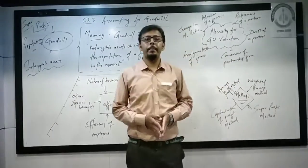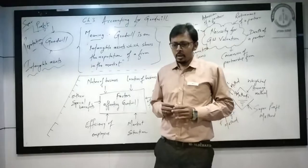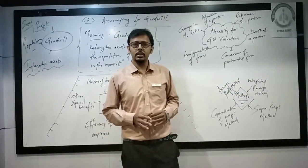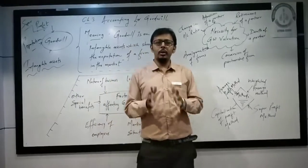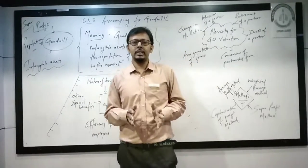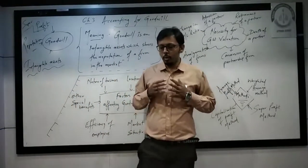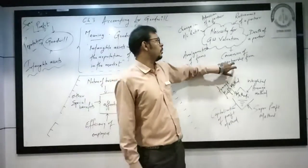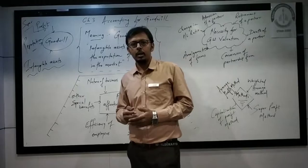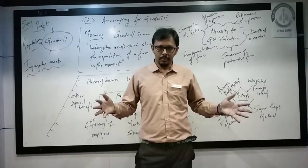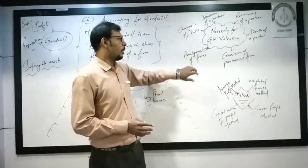Conversion of a partnership firm into a company: if you are running a partnership firm, the maximum capacity is 100 partners as per the Partnership Act 1932. If I want to expand my business through expansion or modernization and need more capital, I want to convert into a company — in that case I also have to value goodwill. And when firms merge, both need to value goodwill. For example, Maruti and Suzuki are two different companies, but when they merge, both companies need to value the amount of goodwill.